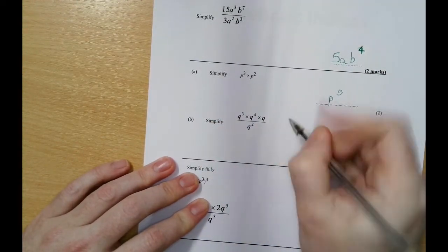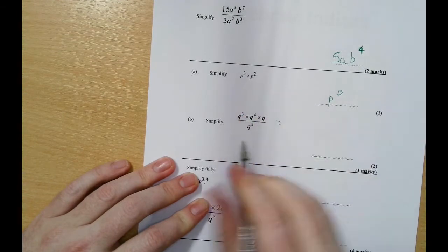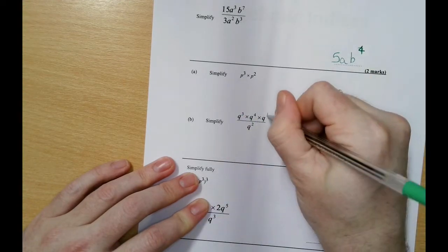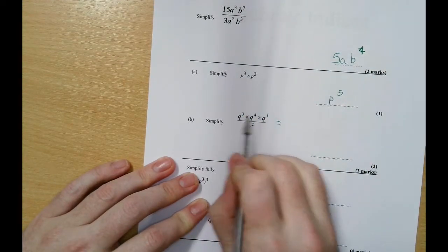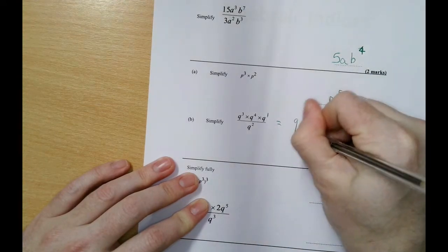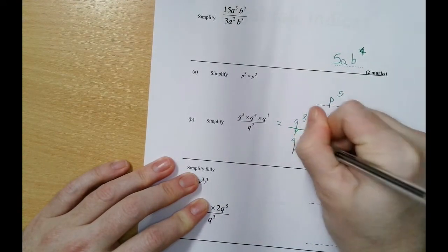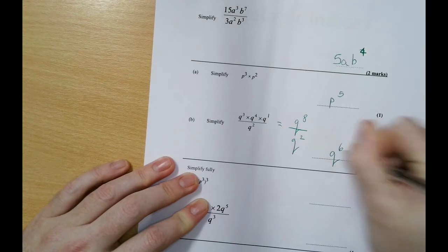This one, because there's all of these bits here, we just want to simplify it. So remember that's to a 1, 3 add 4 add 1 is q to the power of 8 over q squared, which gives us q to the power of 6. p cubed times by itself then times by itself again would be p to the power of 9.